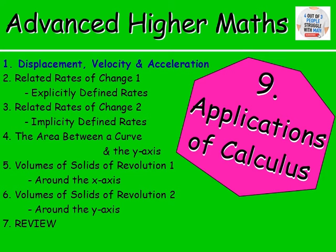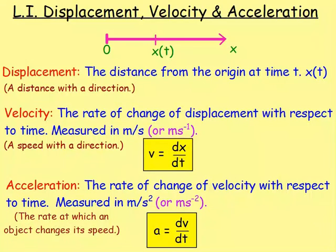We started this chapter off looking at displacement, velocity, and acceleration. The main things to get from this lesson: if you were given the displacement, you can work out the velocity by differentiating. The rate of change of displacement with respect to time is known as the velocity. If you work out the rate of change of the velocity with respect to time, that is your acceleration. So if you're given the displacement, differentiate to get the velocity. If you're given the velocity, differentiate to get the acceleration. And if you want to go back the way, you would integrate.